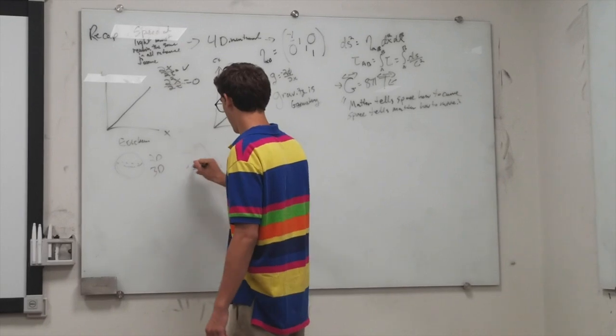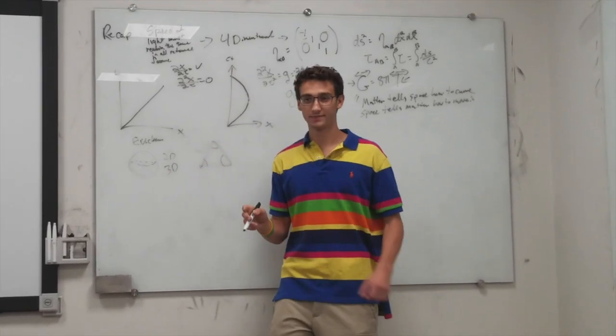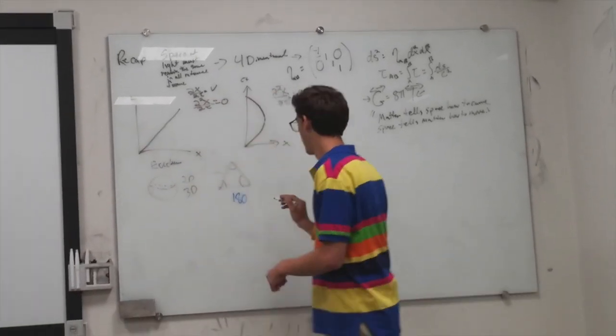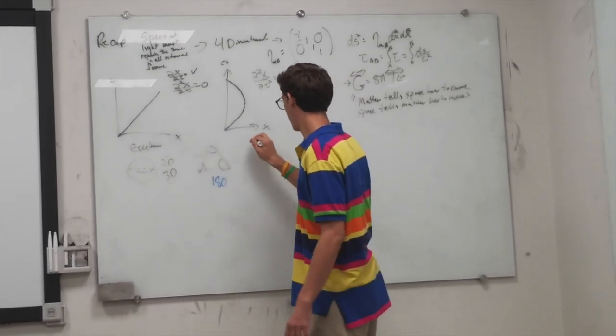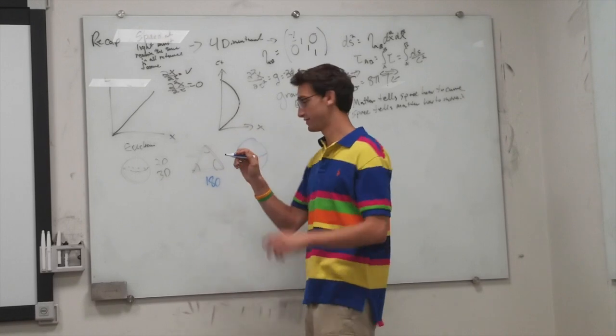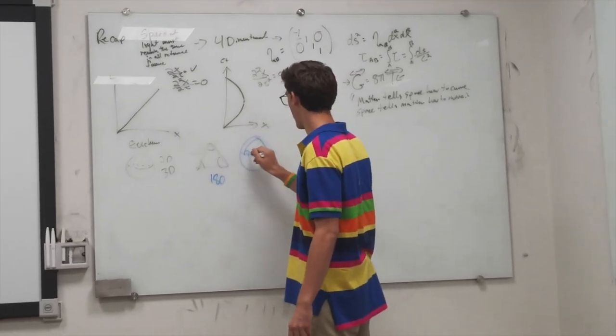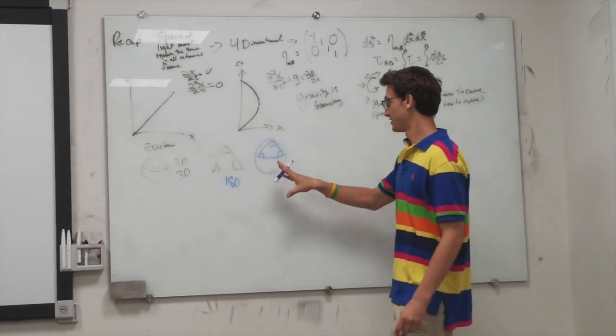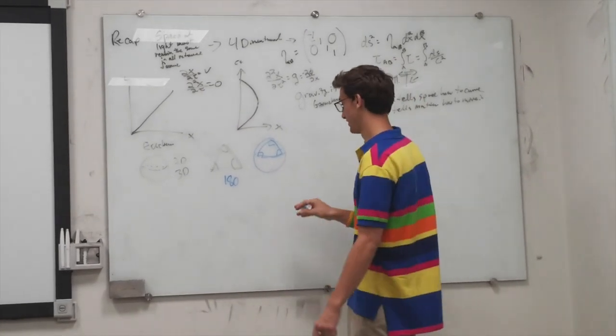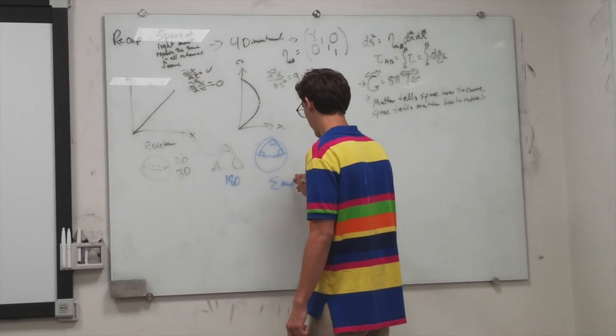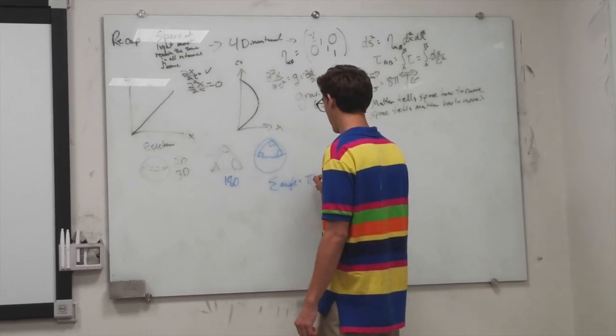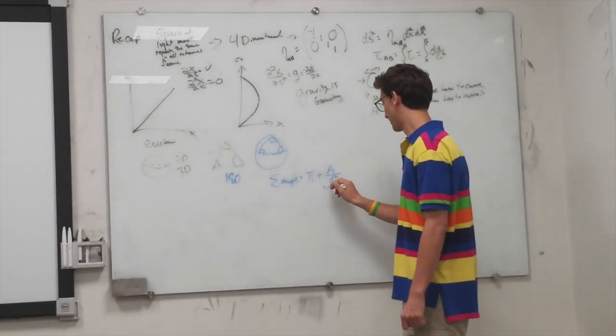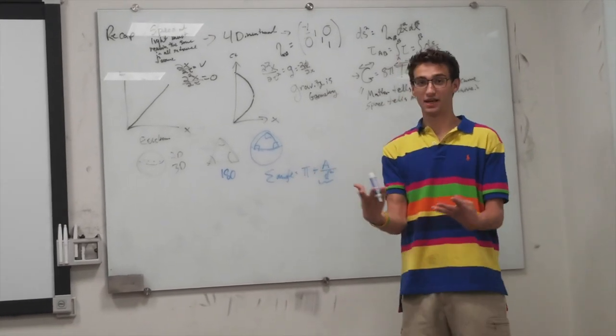But on a curved surface, the sum of the angles is greater than 180 degrees. The formula is pi plus the area of the triangle over the radius of the sphere squared. This is a term that corrects, that kind of corrects Pythagorean's theorem in a sense.